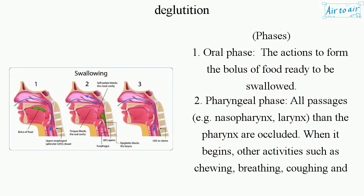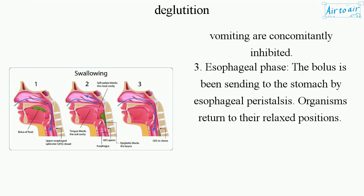There are three phases. Phase 1: the oral phase — actions to form the bolus of food ready to be swallowed. Phase 2: the pharyngeal phase — all passages, e.g. nasopharynx and larynx, are occluded when it begins; other activities such as chewing, breathing, coughing, and vomiting are concomitantly inhibited. Phase 3: the esophageal phase — the bolus is sent to the stomach by esophageal peristalsis, and organs return to their relaxed positions.